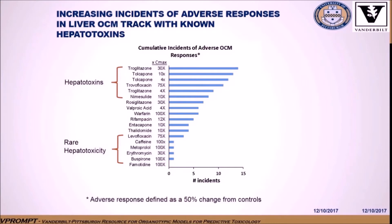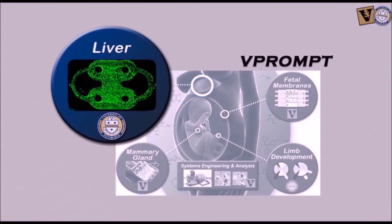The findings from the 15 compound testing are summarized here as a simple cumulative index of adverse incidents determined by the 29 live cell readouts. Known hepatotoxins such as troglitazone, tolcapone, and trovafloxacin have higher cumulative adverse responses compared to compounds with very rare incidents of clinical hepatotoxicity such as ranitidine and metoprolol. Compounds in between have various levels of clinical idiosyncratic hepatotoxicity, and in general, the rank ordering corresponds to the known effects of these compounds. In summary, the liver OCM is a validated, physiologically relevant, three-dimensional microfluidic microphysiology model designed to identify potential liver toxicants through live cell monitoring of temporal as well as concentration-dependent effects.